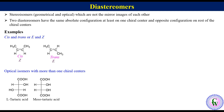L-tartaric acid has a 2R,3R configuration while meso-tartaric acid has 2R,3S. Here we can see that both have the same configuration at C2 but opposite configuration at C3, so these are diastereomers.